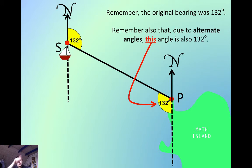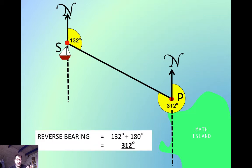It's slightly stretched out in this case, but you've got 132 degree angles due to alternate angles. Now you've also got a straight line, 180 degrees, over on the other side, so the reverse bearing in this case must be 180 plus 132, which is 312.